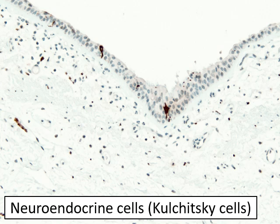Another cell type in the epithelium, very difficult or impossible to see on H&E, is the neuroendocrine cell. These are also called Kulchitsky cells, named after Kulchitsky who first described similar cells in the GI tract. These cells may give rise to tumors such as carcinoid tumors and small cell lung carcinoma, a very dreaded form of lung cancer.